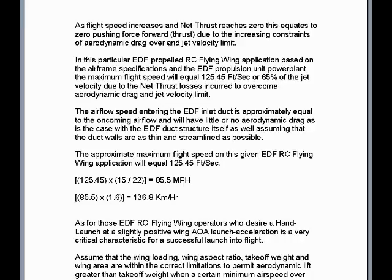The airflow speed entering the EDF inlet duct is approximately equal to the oncoming airflow and will have little or no aerodynamic drag, as is the case with the EDF duct structure itself, assuming the duct walls are as thin and streamlined as possible. The approximate maximum flight speed for this EDF RC flying wing will equal 125.45 feet per second. Multiplied by 15 and divided by 22 to convert feet per second to miles per hour, the top flight speed of this application will reach 85.5 miles per hour.